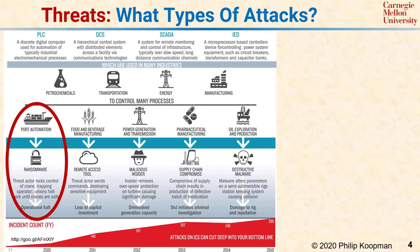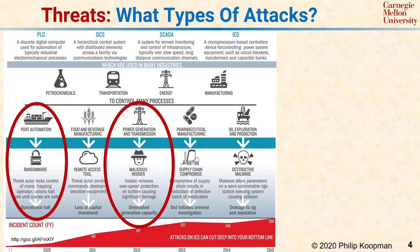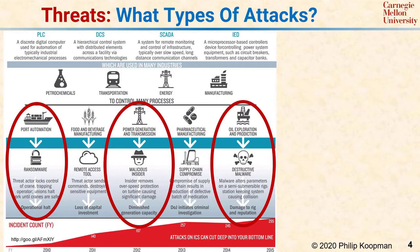Ransomware has been an increasingly difficult problem, including bad guys encrypting hospital records and shutting down businesses. Another example is a malicious insider who modifies operational software in a power generation and transmission facility to cause equipment damage. The last example is an oil exploration rig infected by malware that alters its control parameters, causing damage to the rig. These are just examples, and the potential for different variations and combinations of attacks is almost limitless and applies to most embedded systems.